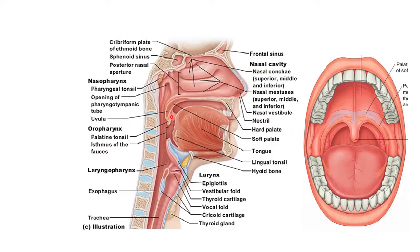The lateral wall of the oropharynx shows the palatine tonsil on either side, located in a triangular fossa called the tonsillar fossa, which is bounded anteriorly by the palatoglossal arch and posteriorly by the palatopharyngeal arch. The anterior wall presents the lingual tonsil, which is formed by numerous nodules of lymphoid tissue underneath the mucous lining of the pharyngeal part of the dorsum of the tongue.